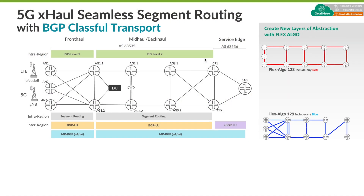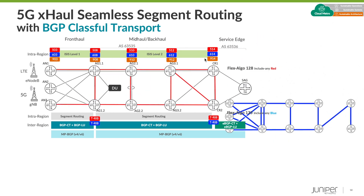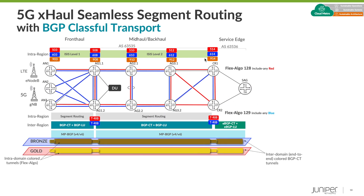Now we start to move into even more sophisticated solutions, setting a foundation with transport classes, service mapping, and eventually network slicing. Here we have seamless segment routing with BGP Class-Full Transport (BGP-CT). BGP-CT is a Juniper-invented protocol currently going through the standardization process — I'll include some links at the end where you can learn more. In this solution we create new layers of abstraction with Flex Algo over the same physical infrastructure, with distinct SIDs advertised across the network.